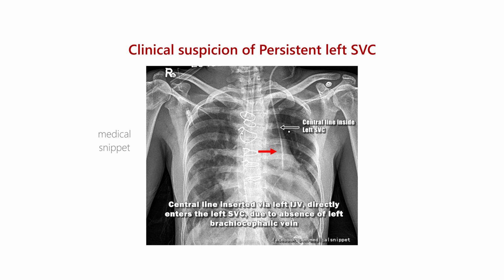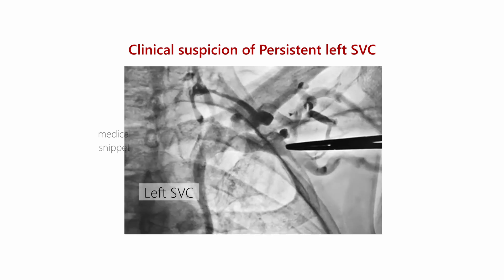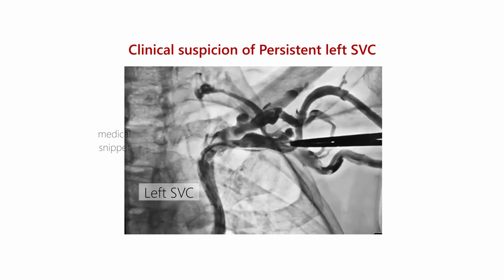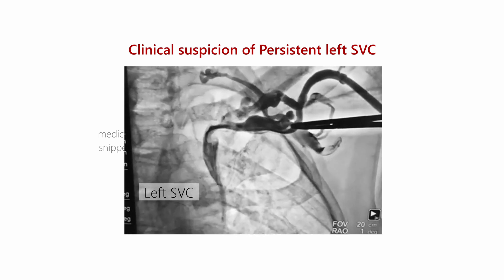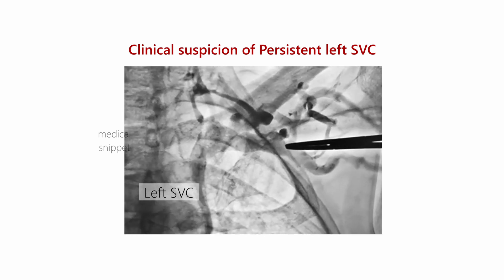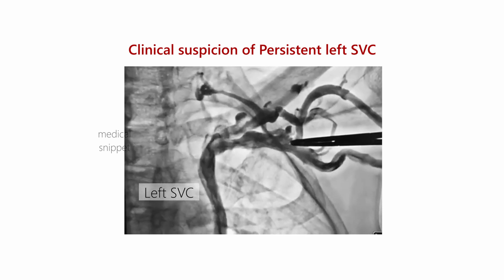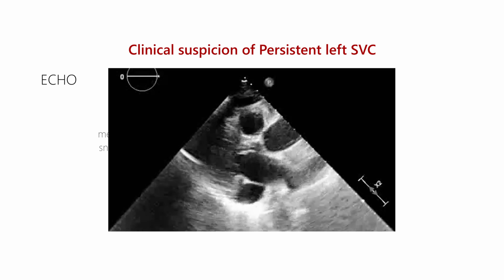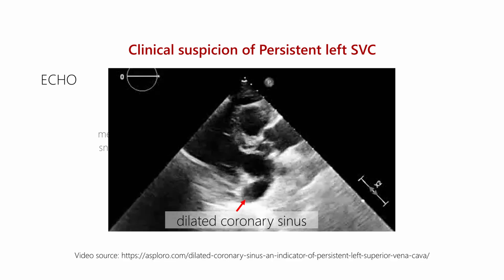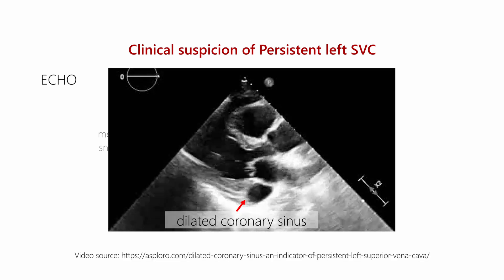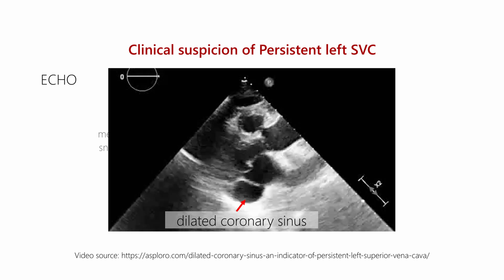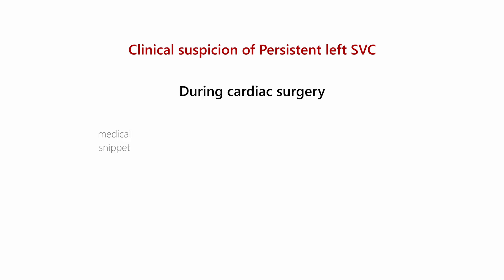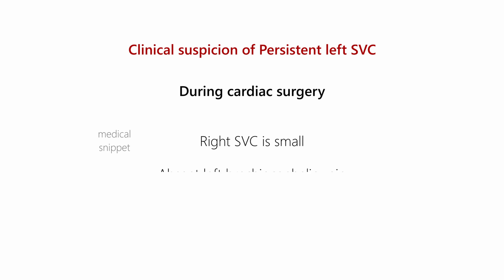In a second example, during placement of a permanent pacemaker, a venous angiogram of the left subclavian vein showed the persistent left superior vena cava. On echocardiography, if the coronary sinus is dilated, one should suspect persistent left superior vena cava. During cardiac surgery, when the right superior vena cava is small or the left brachiocephalic vein is absent, one should look for the left SVC.